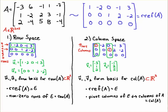For the column space, we have three-dimensional vectors, because there are three rows in the matrix, so each column has three entries in it. V1 and V2 form a basis for the column space of A, which is a subset of the vector space R3. If we call the RREF of A the matrix E, then the pivot columns of E correspond to the columns of A that we call the column space of A.